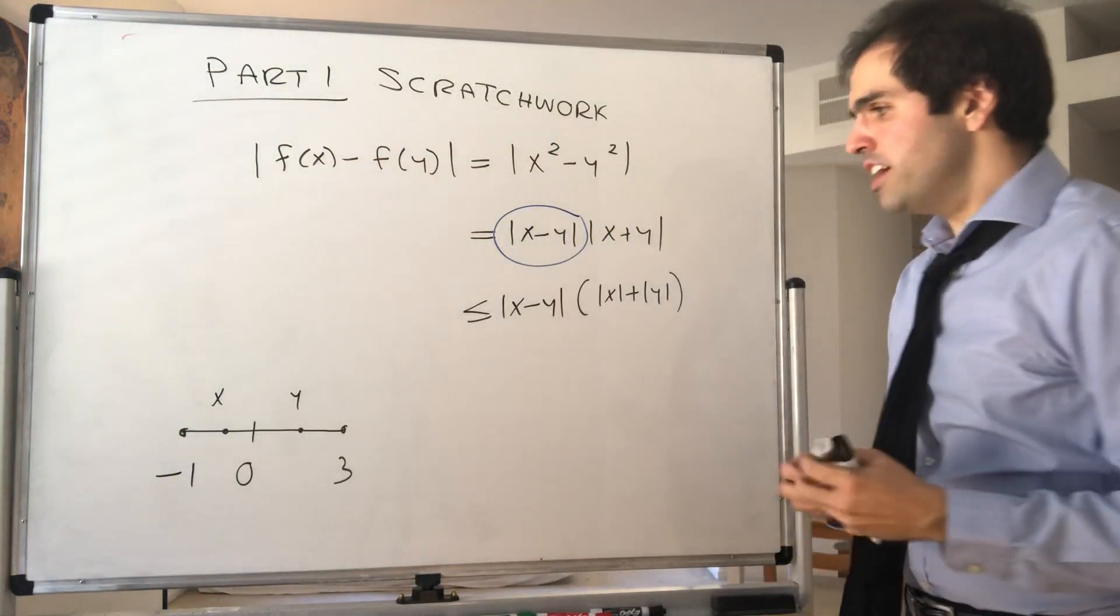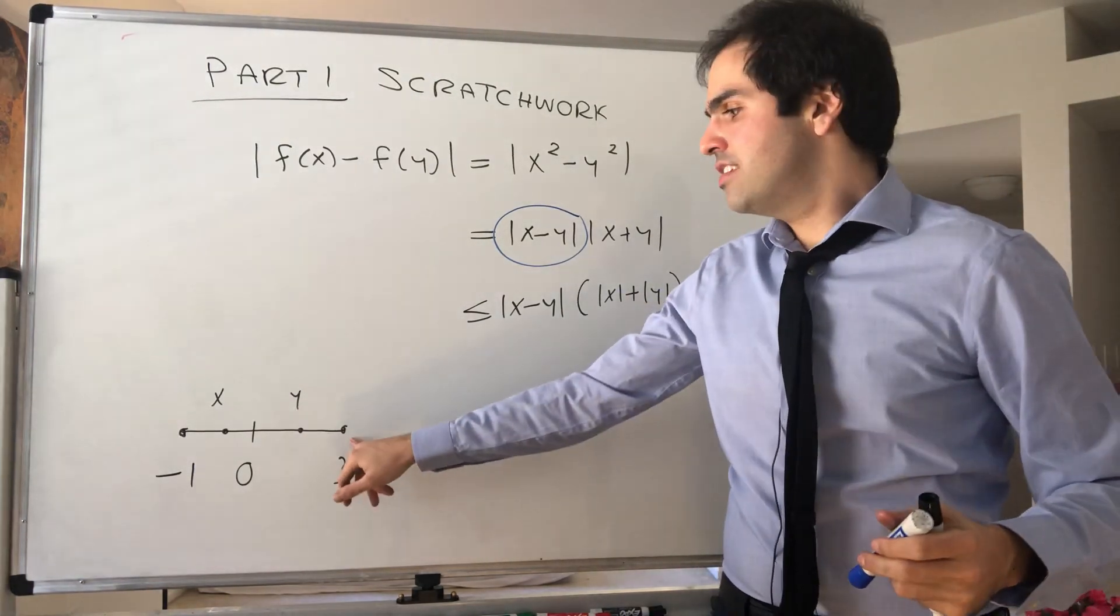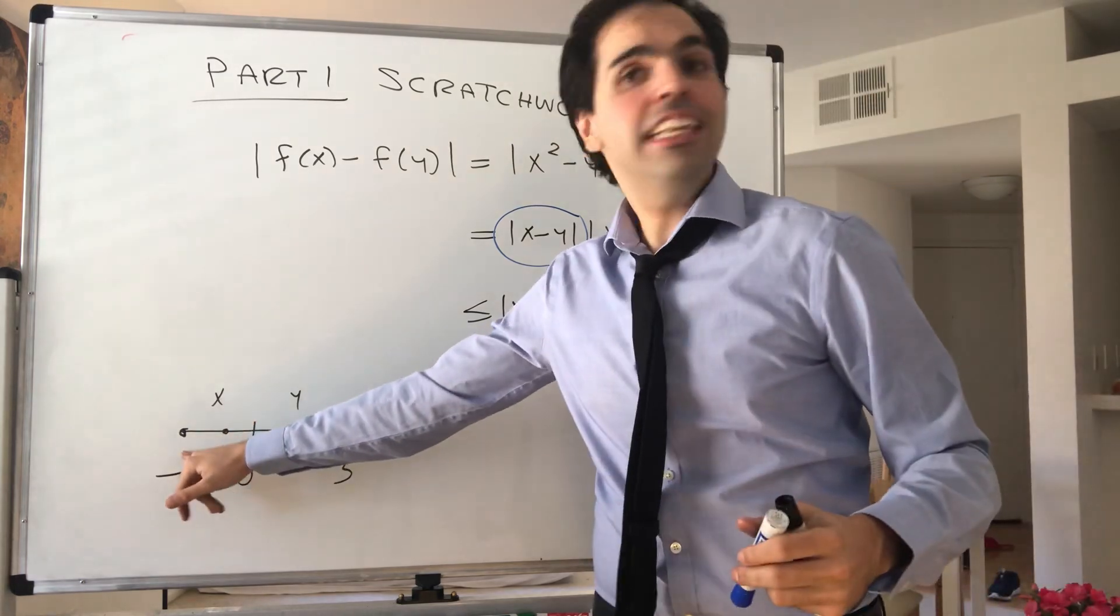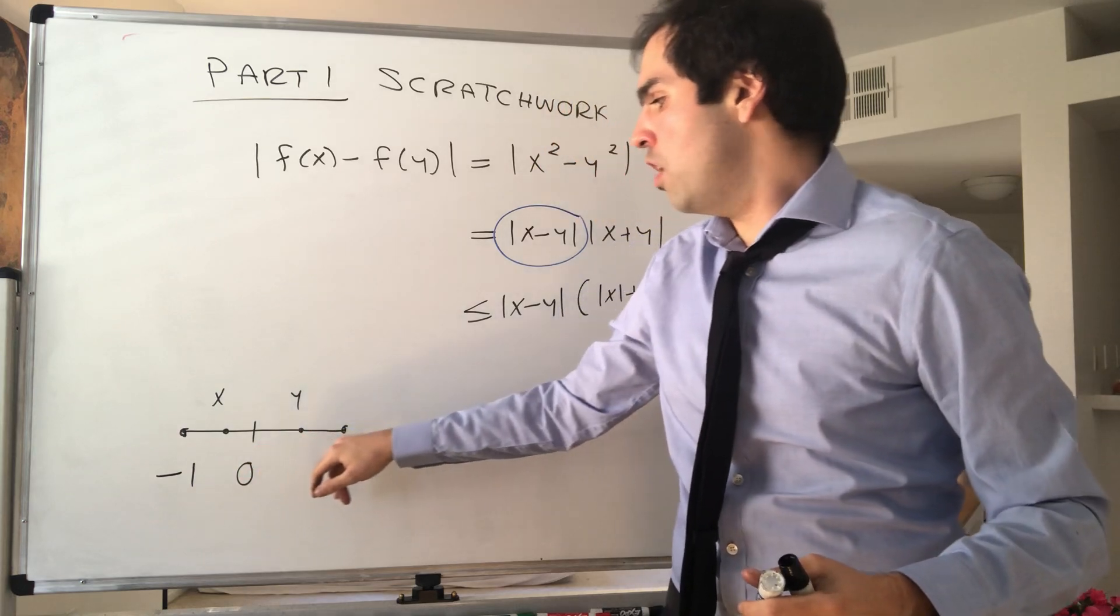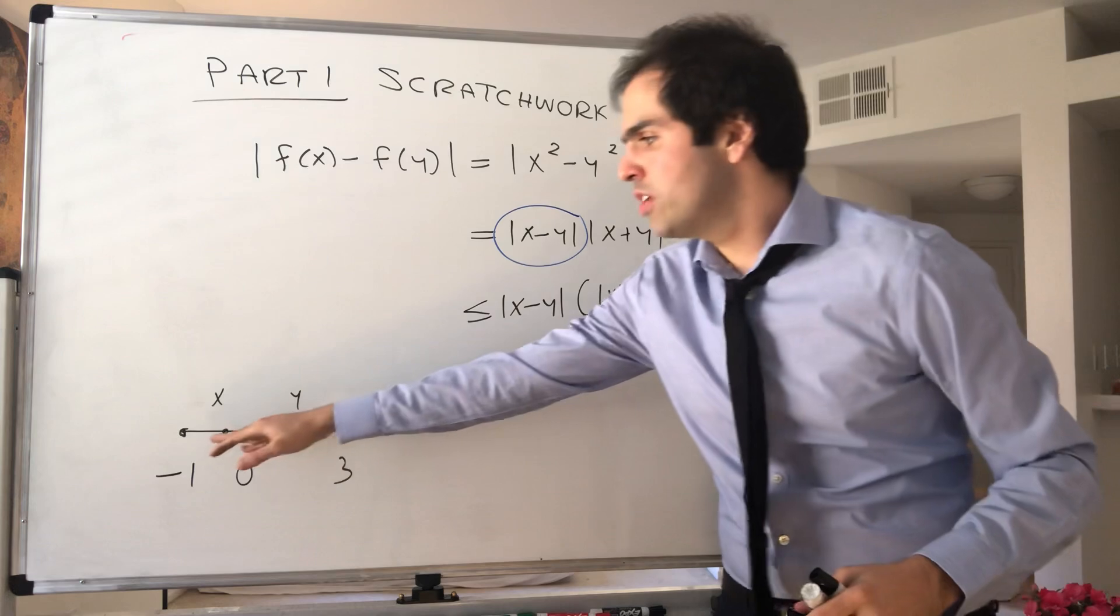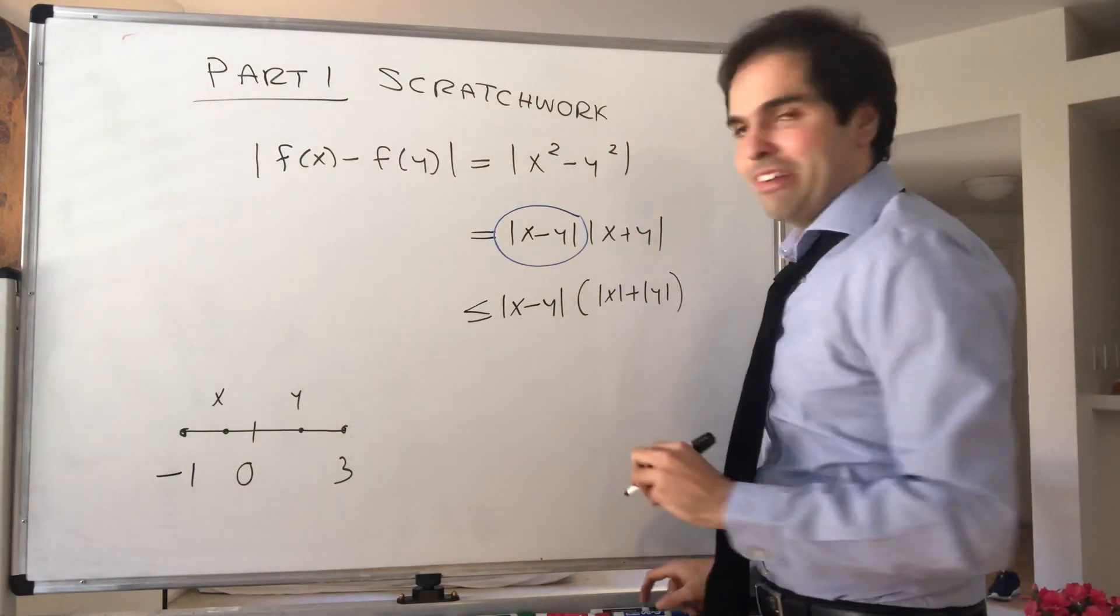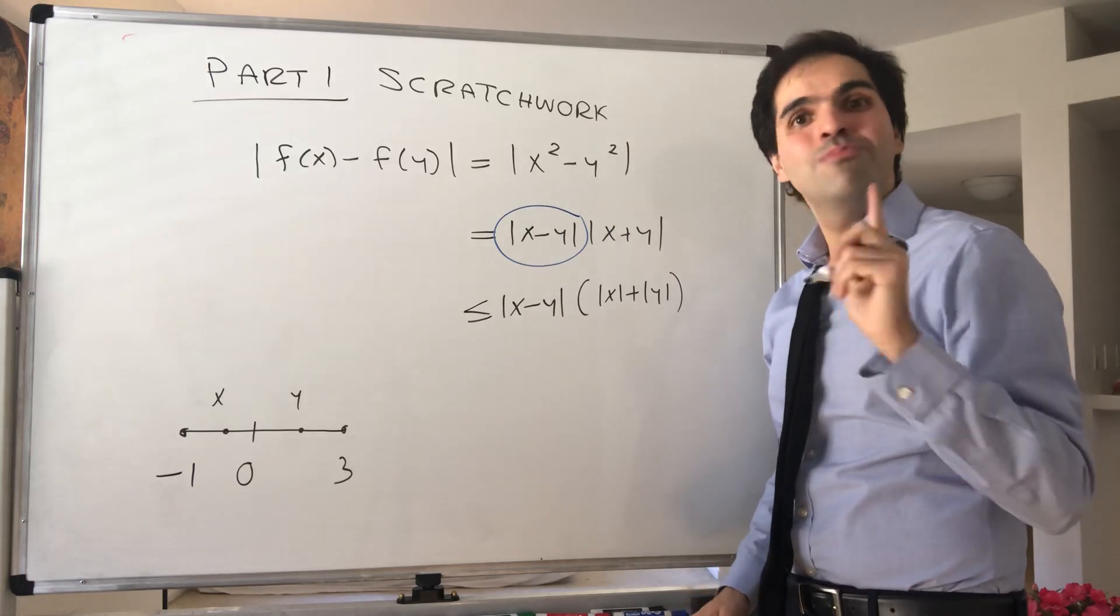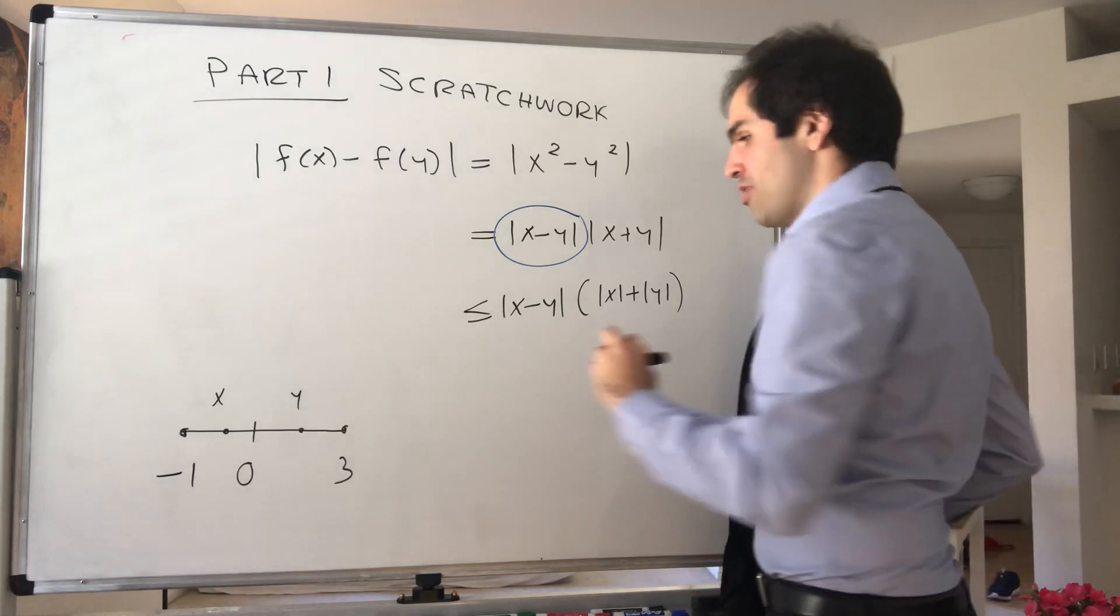Well, notice in particular, the biggest magnitude y can have is 3, because here the magnitude is just 1. So it's kind of magnitude 1, 0, up to 3. So |y| ≤ 3, and |x| ≤ 3. So this is where it's very important to use the fact that x and y are in that interval.